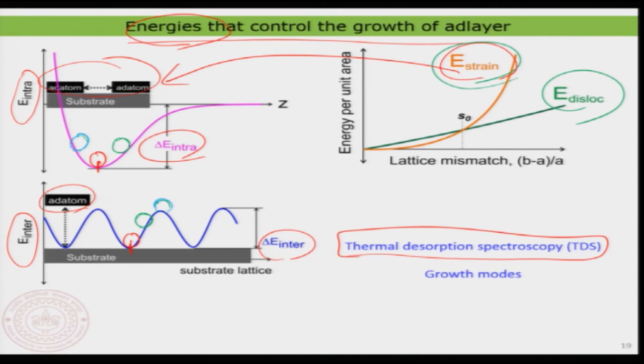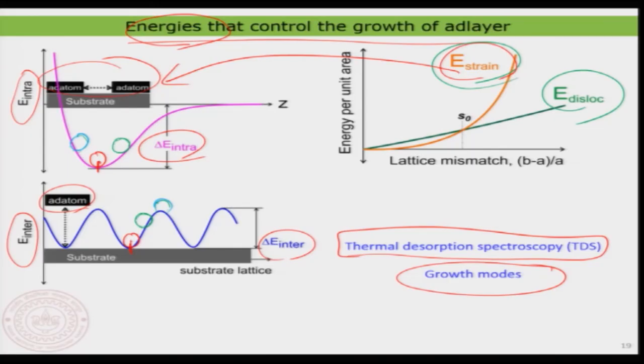We also learned that these energies control the type of growth modes. For atom-like adsorbates, there are three different growth modes: layer-by-layer growth, island-type growth, and a mixed mode where a wetting layer forms first followed by island formation. The factors controlling these growth modes are directly related to the energies involved. This is one of the most important parts of the lecture for understanding adsorption of atoms and growth in surface science.